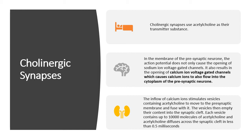In the presynaptic neuron, the action potential results in the opening of sodium-gated channels — we already know that's the action potential story — but it also opens the calcium ion voltage-gated channels. When the impulse reaches the presynaptic neuron, voltage-gated calcium channels open and calcium ions flow into the cytoplasm. This stimulates vesicles containing acetylcholine to be released. Each vesicle has about 10,000 molecules of acetylcholine, which may explain why your nervous system is so fast.